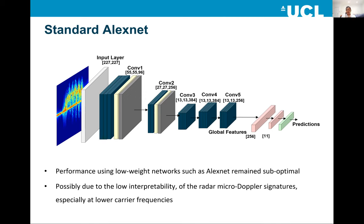Especially at low frequency — if we increase the radar operating frequency, we get very fine signatures, but as the frequency decreases, the resolution becomes very low, which may reduce the classification capability of the network. So I'm proposing certain modifications that will improve the classification performance of the standard AlexNet without increasing the computational burden on the network itself.